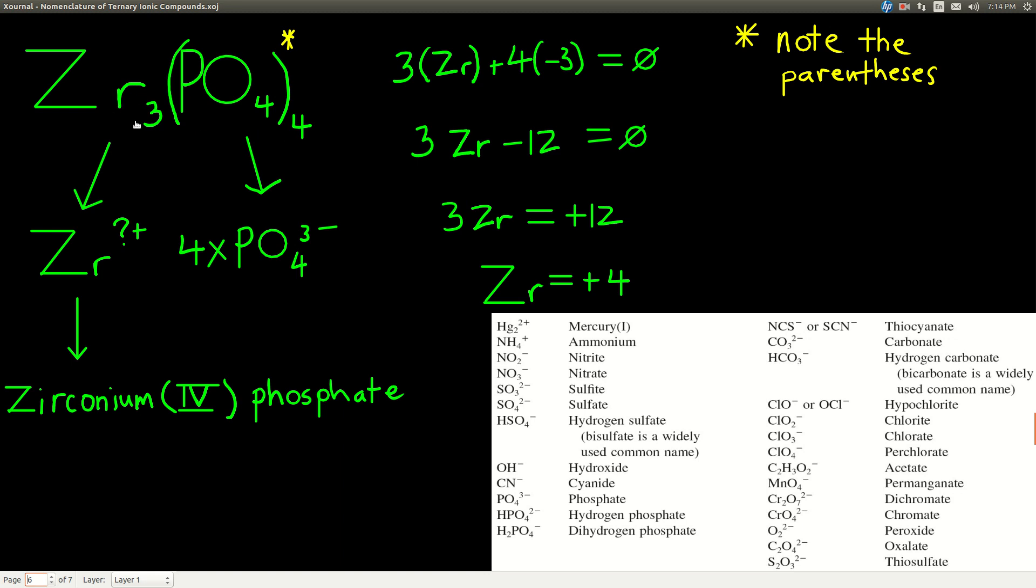So to name this, okay, this is a metal, zirconium. And because it was not on that chart, we have to use a roman numeral to say its charge. So to figure out its charge, we're going to still use the rule that the total charge on the cations must equal the total charge on the anions. Well, there's four phosphates. Each has a negative 3 charge. So we have 12 negative charges here. We have to have 12 positive charges on the zirconium. They have to be split evenly over all three zirconiums. So if there's 12 negative charges split over three atoms, there's going to be a positive 4 on each. So we'll call it zirconium four phosphate.